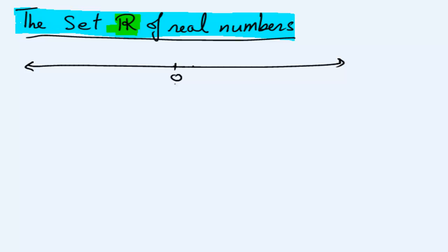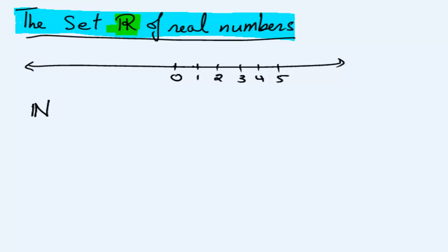We have zero somewhere — zero is a real number. The most common numbers we use every day are the counting numbers: one, two, three, four, five and so on. We actually have a special name for these numbers. They're called the natural numbers, and we have a special symbol to represent them.